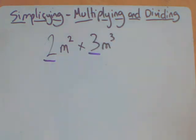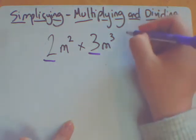Let's do the numbers first. Now, a big mistake students make with this is for some reason, despite the fact it says multiply in the middle, students will add the numbers together. So I'll underline the numbers in purple. 2 multiplied by 3 gives me 6.